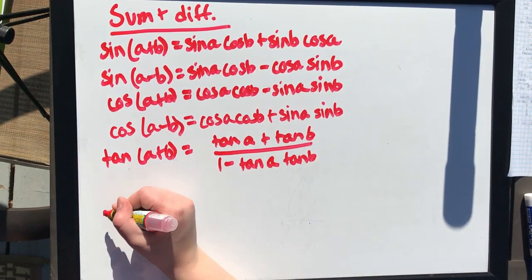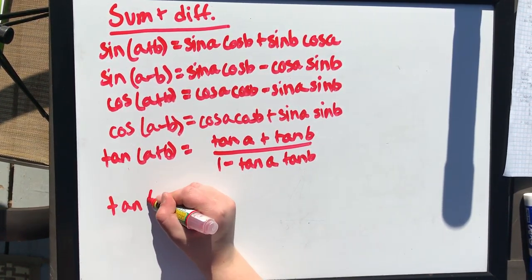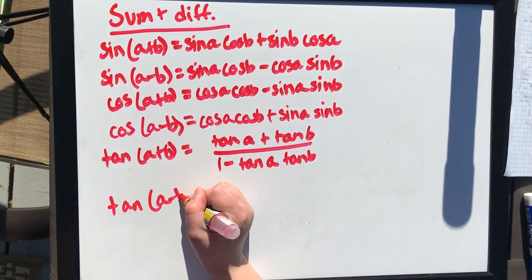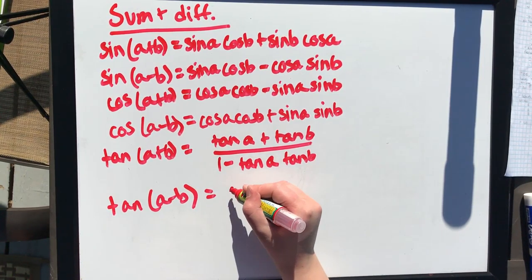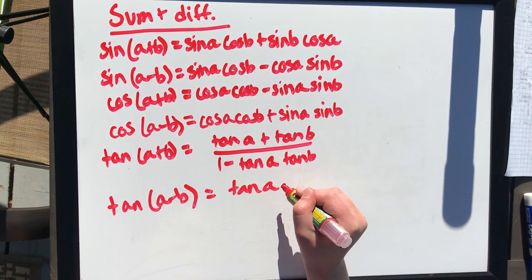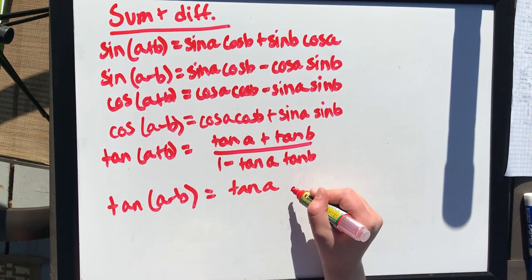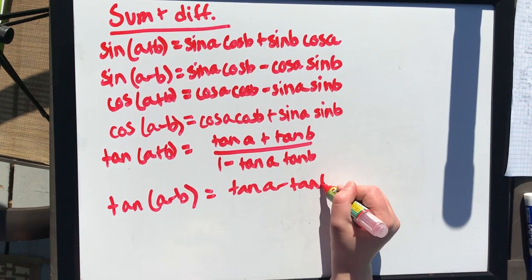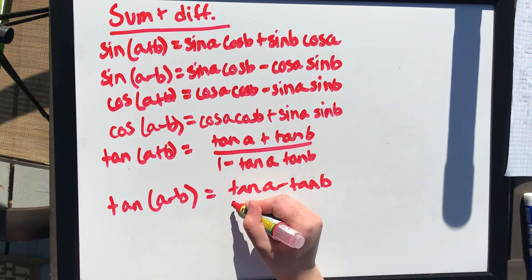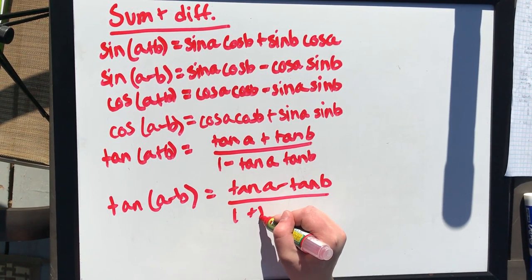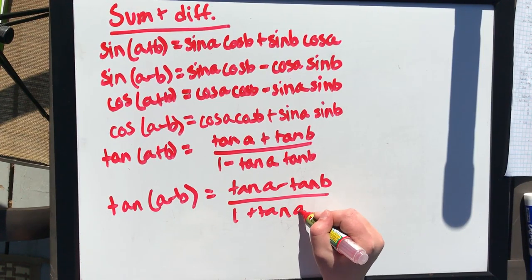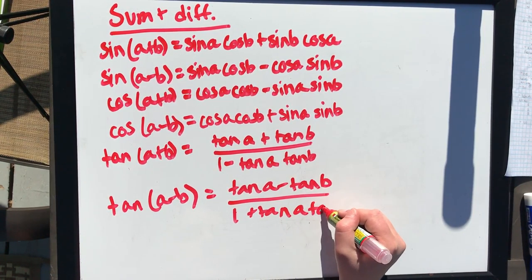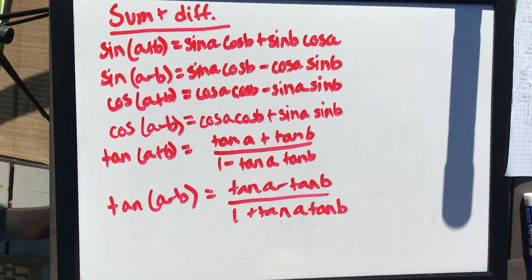And we have tangent of (a − b), which equals tan a minus tan b, all over 1 plus tan a tan b. And those are our sum and difference identities.